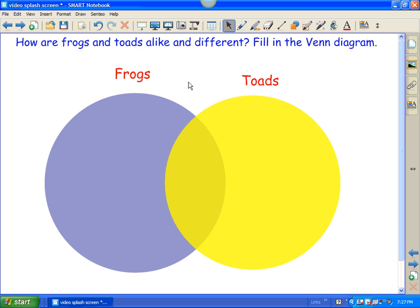In Smart Notebook, whatever you create first automatically always gets sent to the back. And since I typed my words first, it is going behind my Venn diagram. Same with toads. It doesn't show up very good.